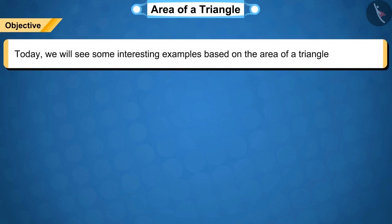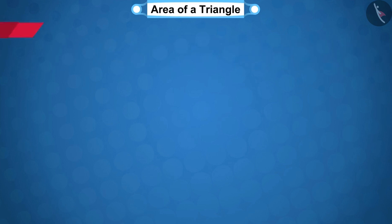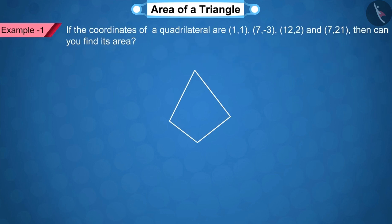Today in this video, we will see some interesting examples based on this. If the coordinates of a quadrilateral are (1, 1), (7, -3), (12, 2) and (7, 21), then can you find its area?